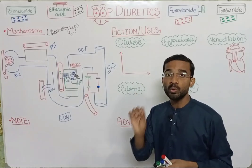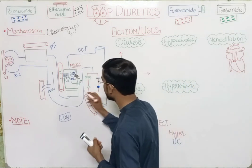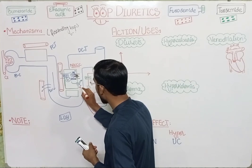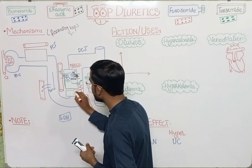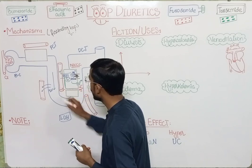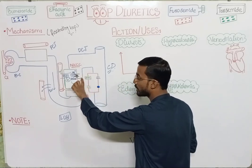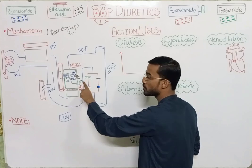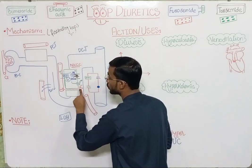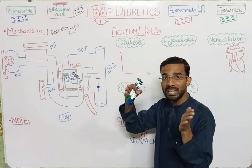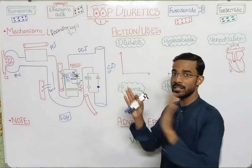Due to the increased positivity in the tubule, two divalent ions — calcium and magnesium — start moving into the interstitial space and finally into the blood via the paracellular pathway between cells. This is the normal mechanism for calcium and magnesium reabsorption in the ascending loop of Henle.